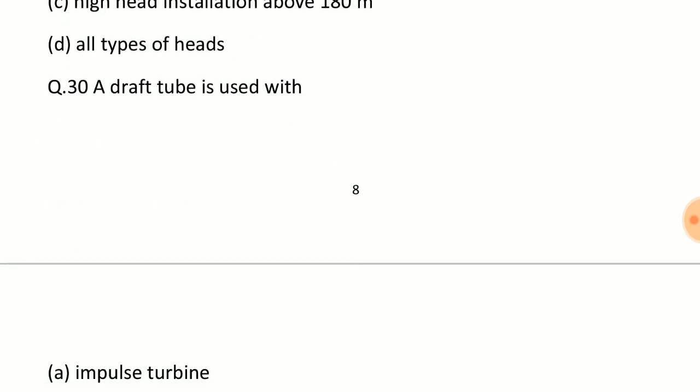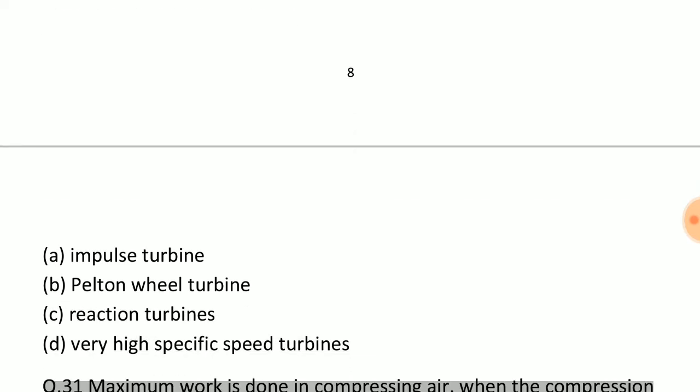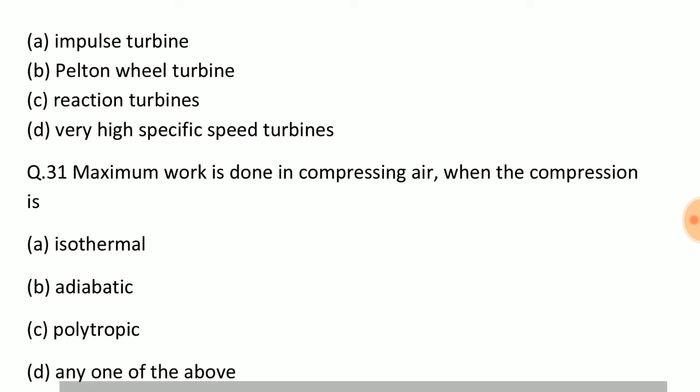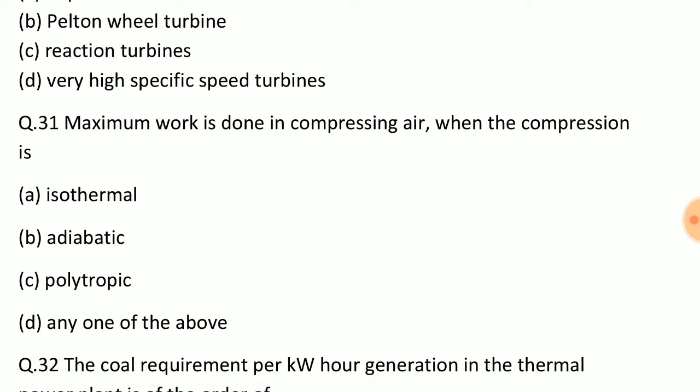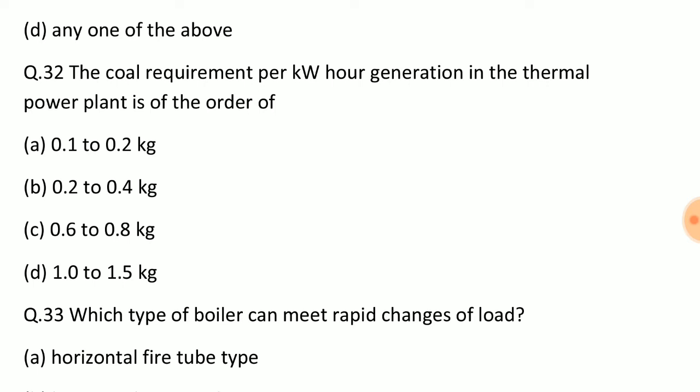Question: A draft tube is used with? Answer: Option C, reaction turbines. Question: Maximum work is done in compressing air when the compression is? Answer: Option B, adiabatic. Question: The coal requirement per kilowatt hour generation in the thermal power plant is of the order of? Answer: Option C, 0.6 to 0.8 kg.